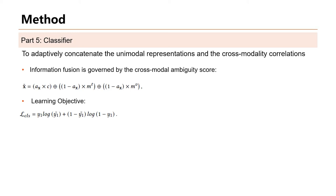We set the weight of cross-modal correlation as A and the weight of unimodal as 1-A, so that the classifier relies on cross-modal correlation when A is large, meaning strong ambiguity appears. Therefore, for news with different levels of ambiguity, the proposed ambiguity learning module can adaptively aggregate unimodal features and cross-modal correlations.